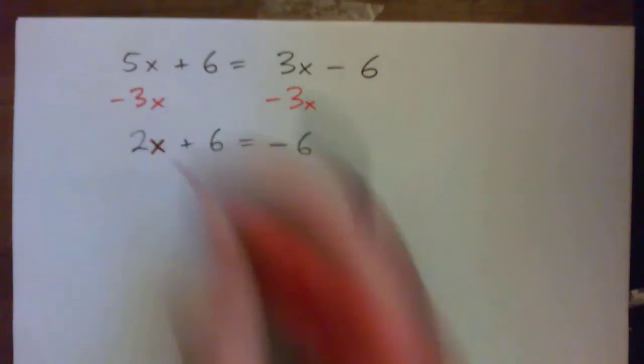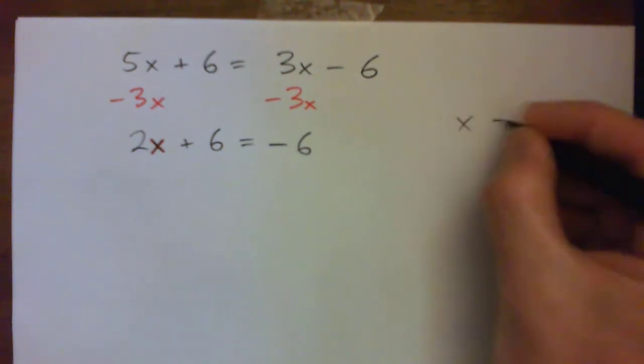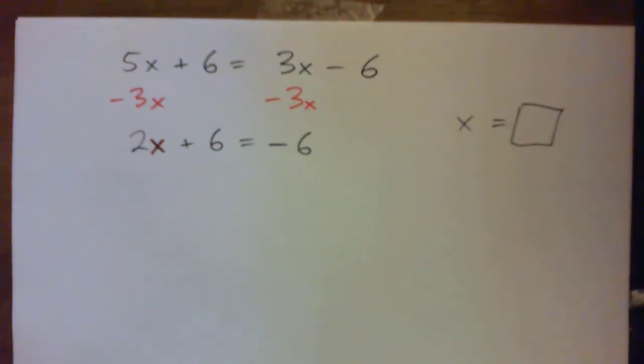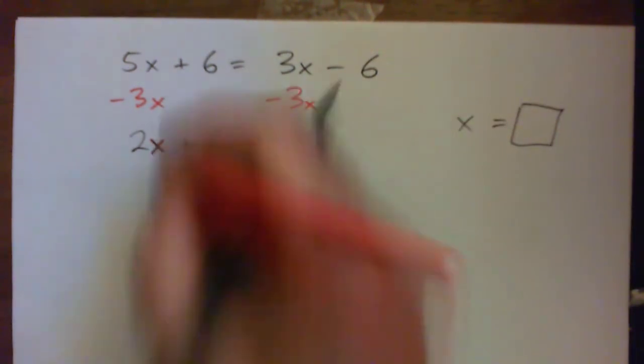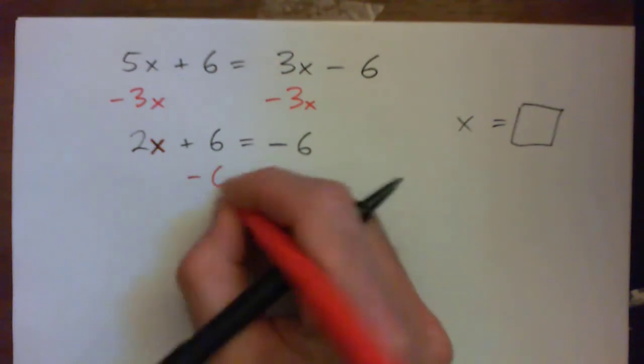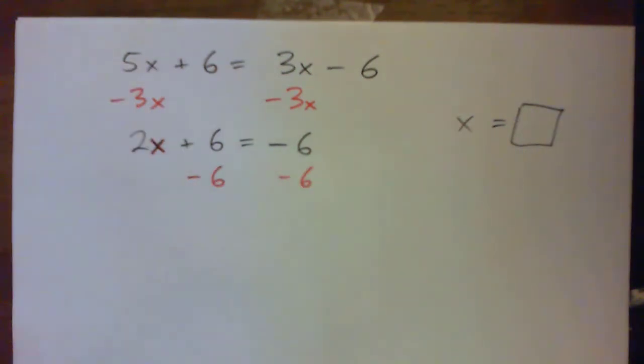Right. And so now we're simply solving for x. We want to find x is equal to some number. So I'm going to get this little x guy on his own. So that's why we subtract 6, right? Right.